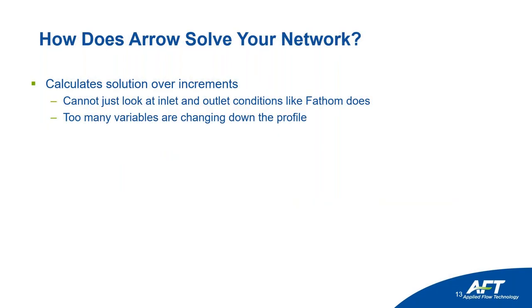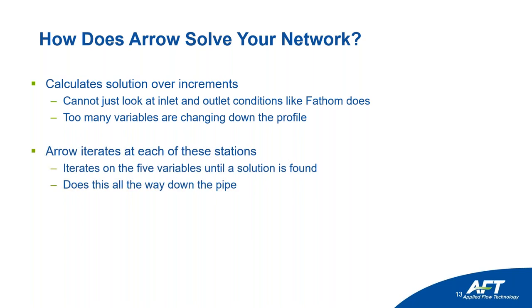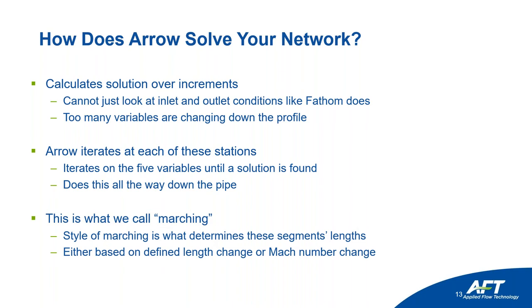Let's talk about how Aero solves your network. We have to solve those differential equations, but it does so numerically — in distinct and discrete chunks. We can't just look at inlet and outlet conditions like Fathom does; there are too many variables changing down the profile. So Aero iterates at each station throughout the pipe on those five variables: pressure, temperature, density, velocity, and enthalpy, all the way down the pipe. This is what we call marching.